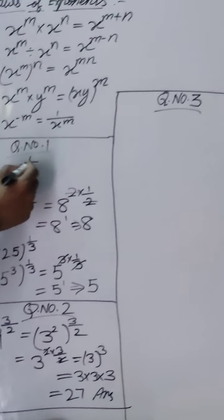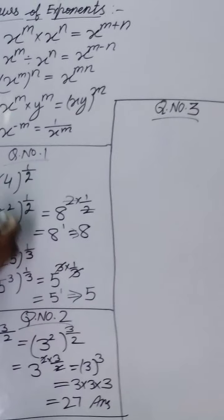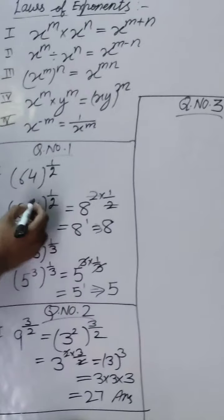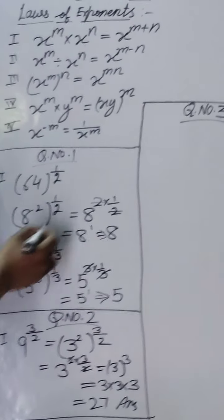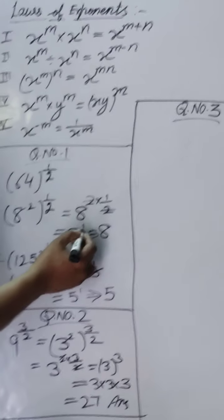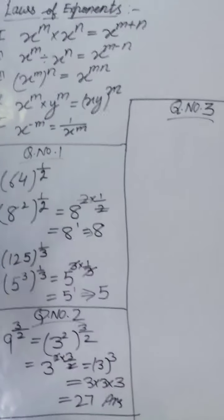64 power 1 by 2. 64 is 8 square, so 8 square whole power 1 by 2. Power raised to power multiply, so 2 multiply 1 by 2, 2s cancel, it is 8 power 1, so 8 is the answer.